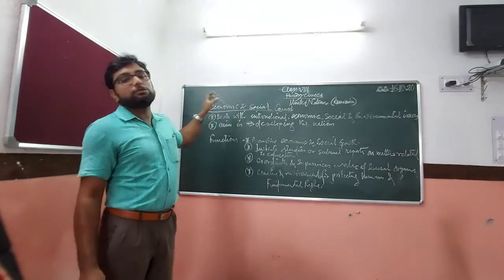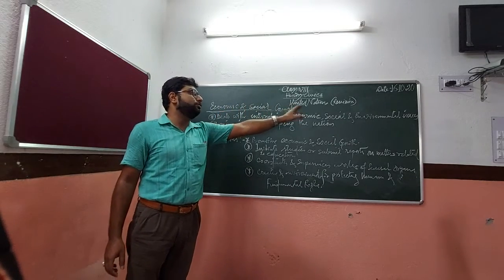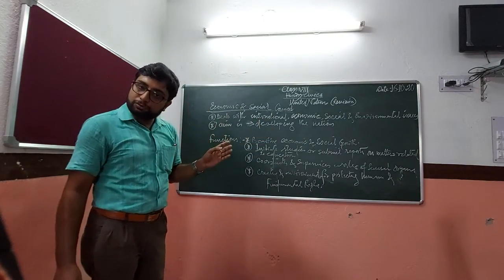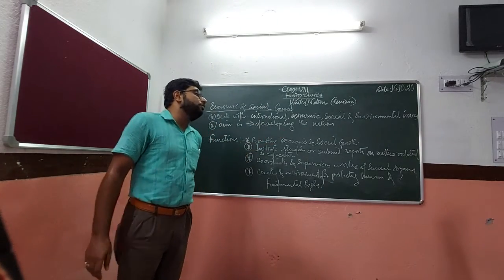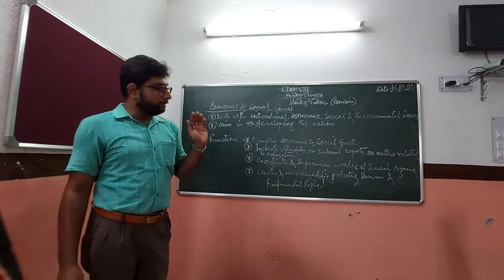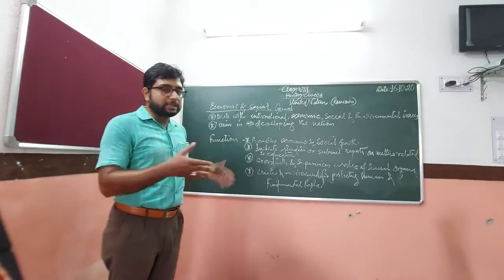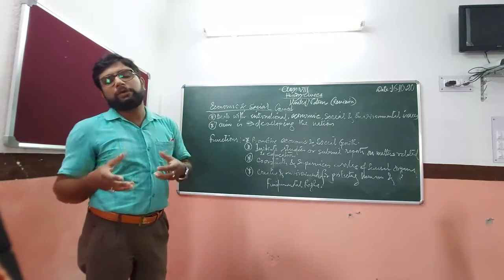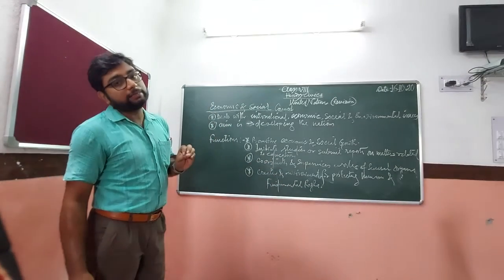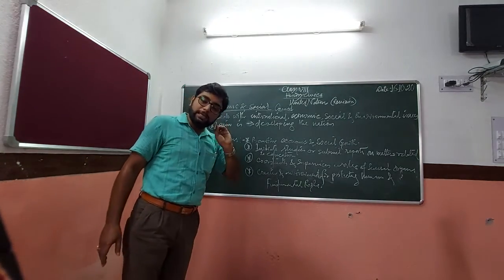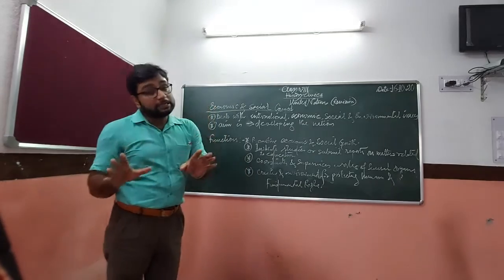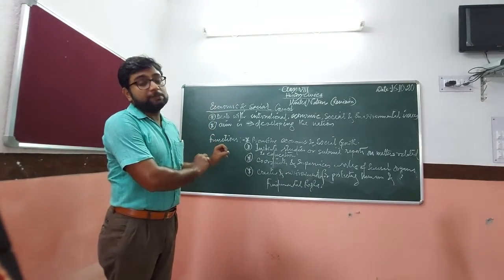In recap: the Economic and Social Council is a council that deals with international economic, social, and environmental issues and whose aim is developing nations. Its major functions are: first, promoting economic and social growth; second, initiating studies and submitting reports on matters related to education; third, coordinating and supervising the agencies of the United Nations like UNESCO, UNICEF, WHO, ILO, etc.; and fourth, creating and maintaining an environment of protecting human and fundamental rights — especially in countries where rights have been badly affected, particularly in Middle Eastern countries.